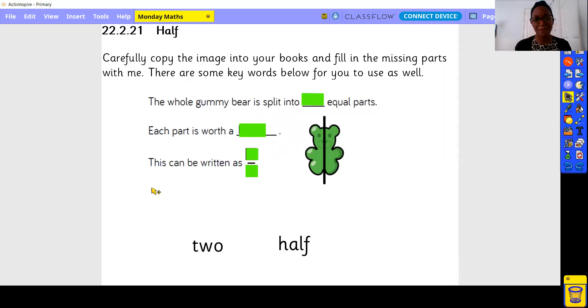And if it is the gummy bear, great. And if it's a circle, just swap the word. Let's write it in together. The whole gummy bear is split into two equal parts. Each part is worth a half. This can be written as one over two because that represents half when it's written down. Here you can see some spellings you might need to help you fill in those sentences. Feel free to pause here and give that a go.